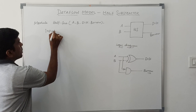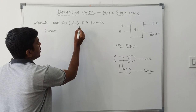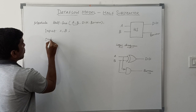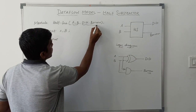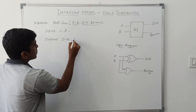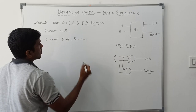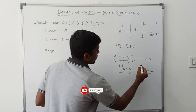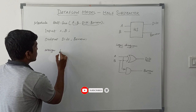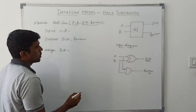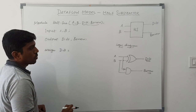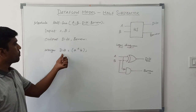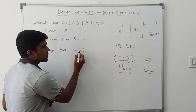First I declare the input variables. Among these four variables, A and B are considered as the input variables — so input A, B. Then the output variables: difference and borrow are considered as outputs. Then using the assign statement: assign difference equal to A XOR B. This capital symbol represents the XOR operation, so difference equals A XOR B.